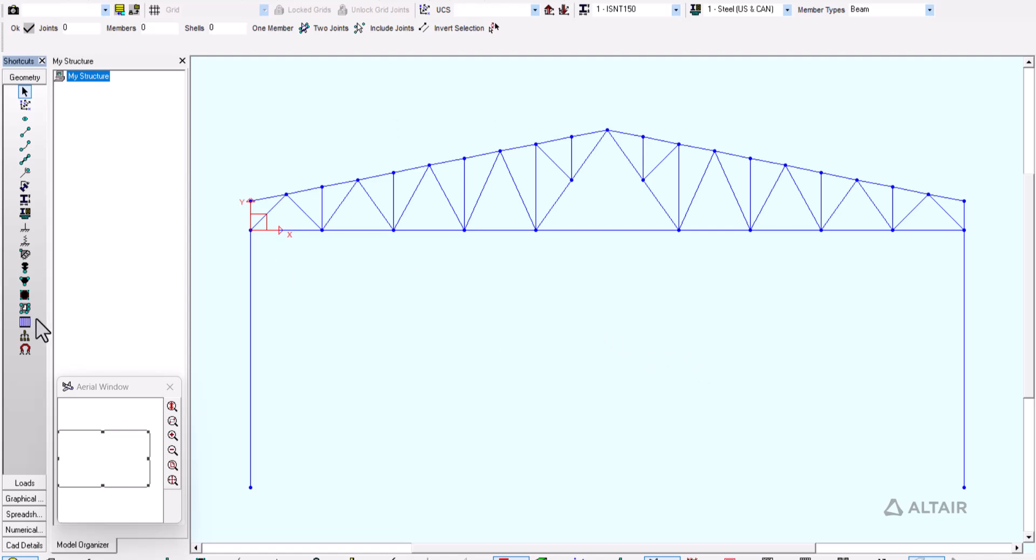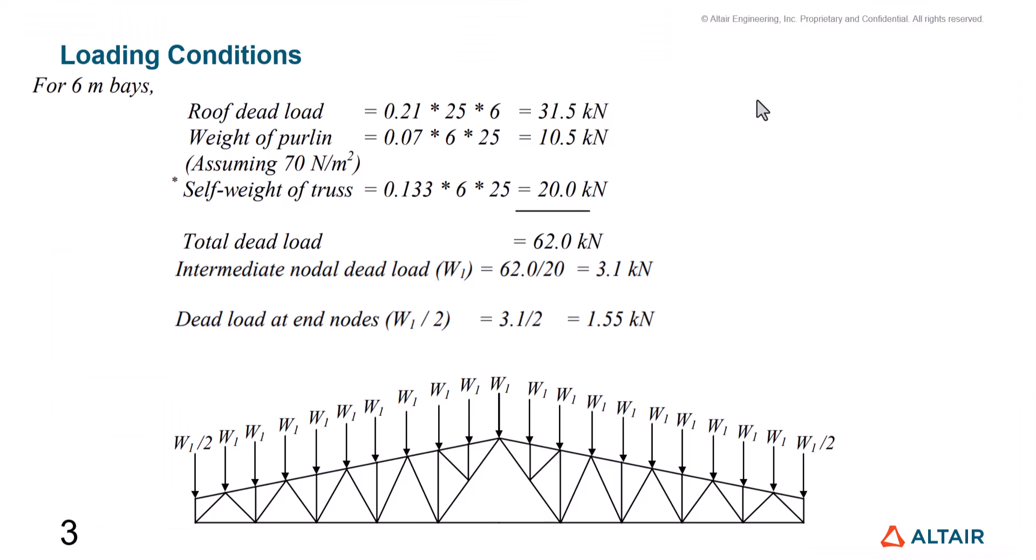We have inputted this same geometry in S-Frame and added the supports. Let's start with loading conditions for a 6-meter bay. We begin with our dead loads. All of these factors and coefficients are obtained from IS800:2007. With the roof dead load, we have 0.21 kilograms per square meter.